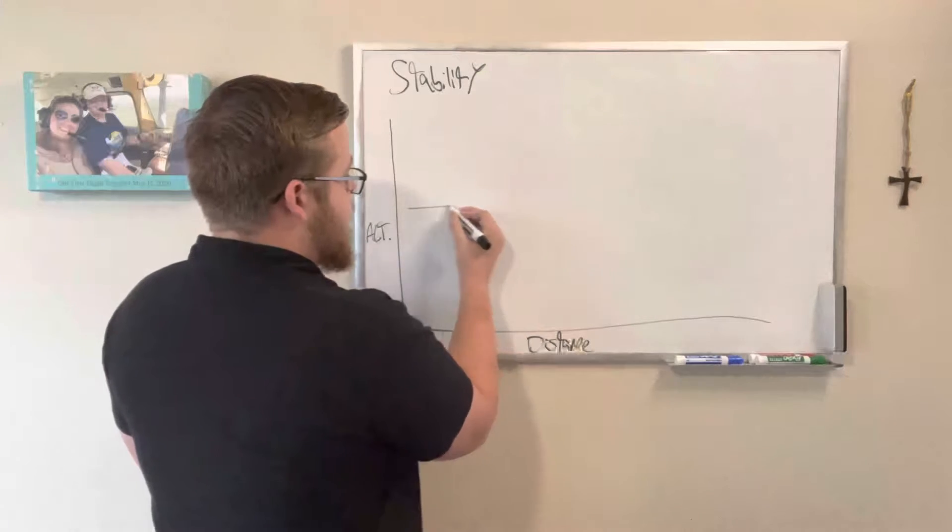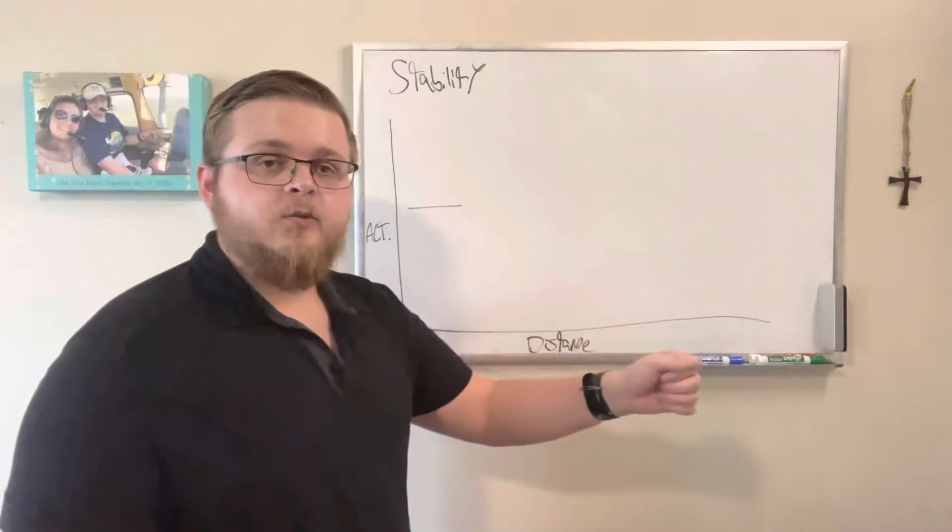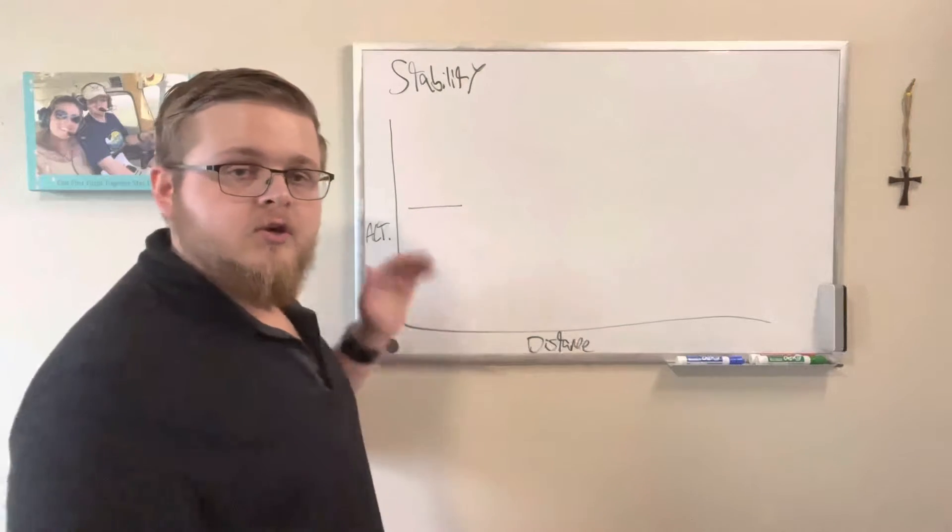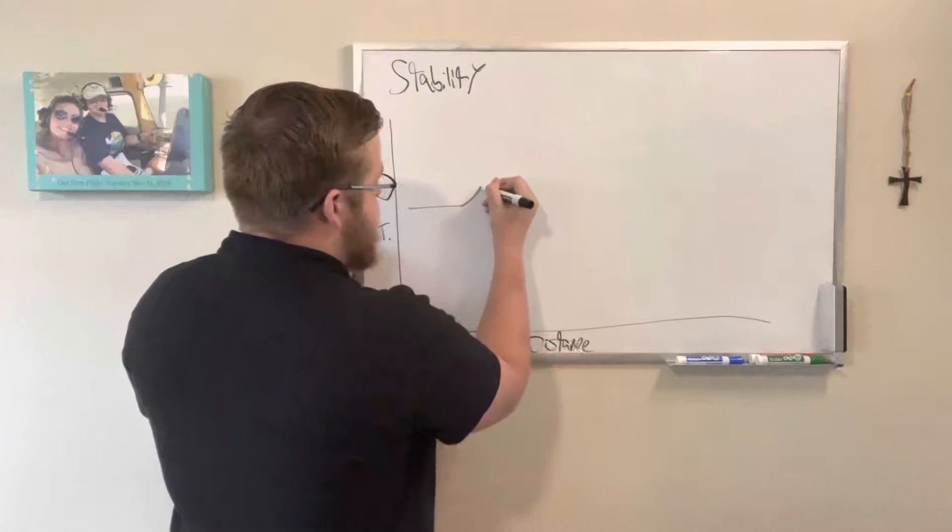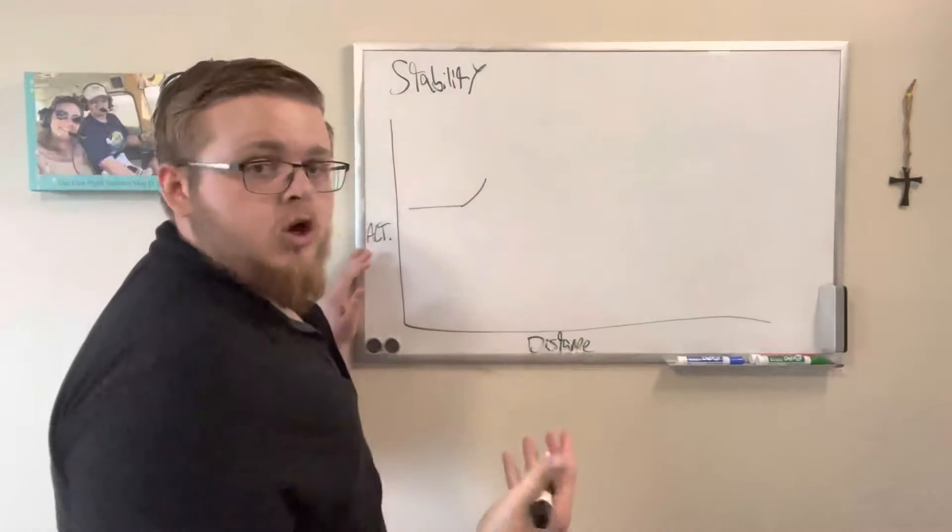So imagine we are an aircraft flying straight and level and for some reason we suddenly yank back on the controls. Our altitude would begin to rise and then we let go.